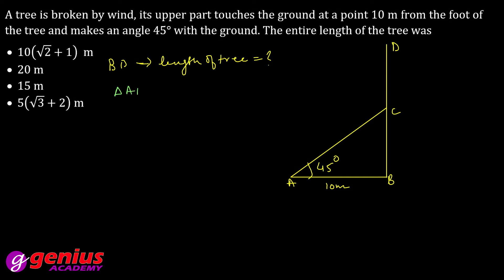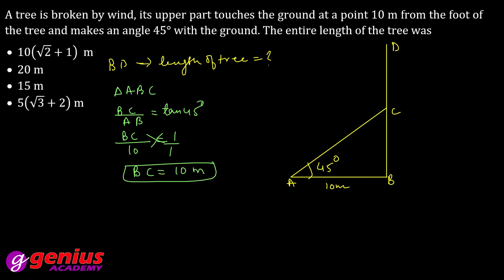In triangle ABC, tan θ = perpendicular/base = BC/AB. θ = 45°, AB = 10 m, tan 45° = 1, so BC = 10 m. Phir AC bhi nikaalte hain: cos θ = AB/AC, so 10/AC = cos 45° = 1/√2. Cross multiply karenge, AC = 10√2 m.